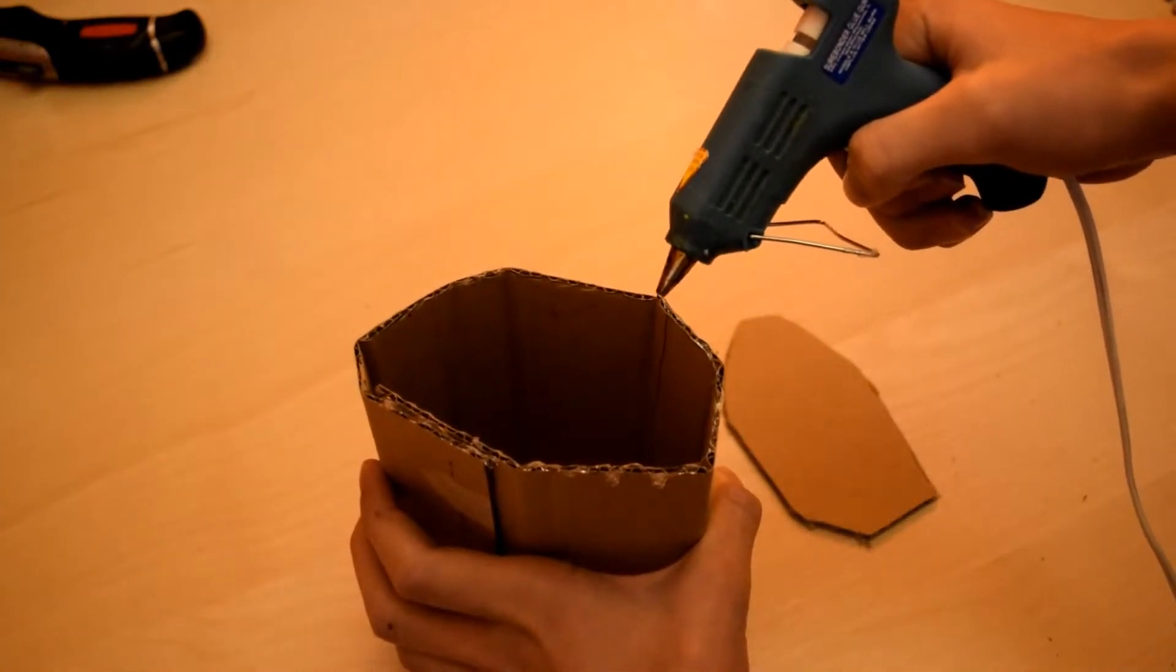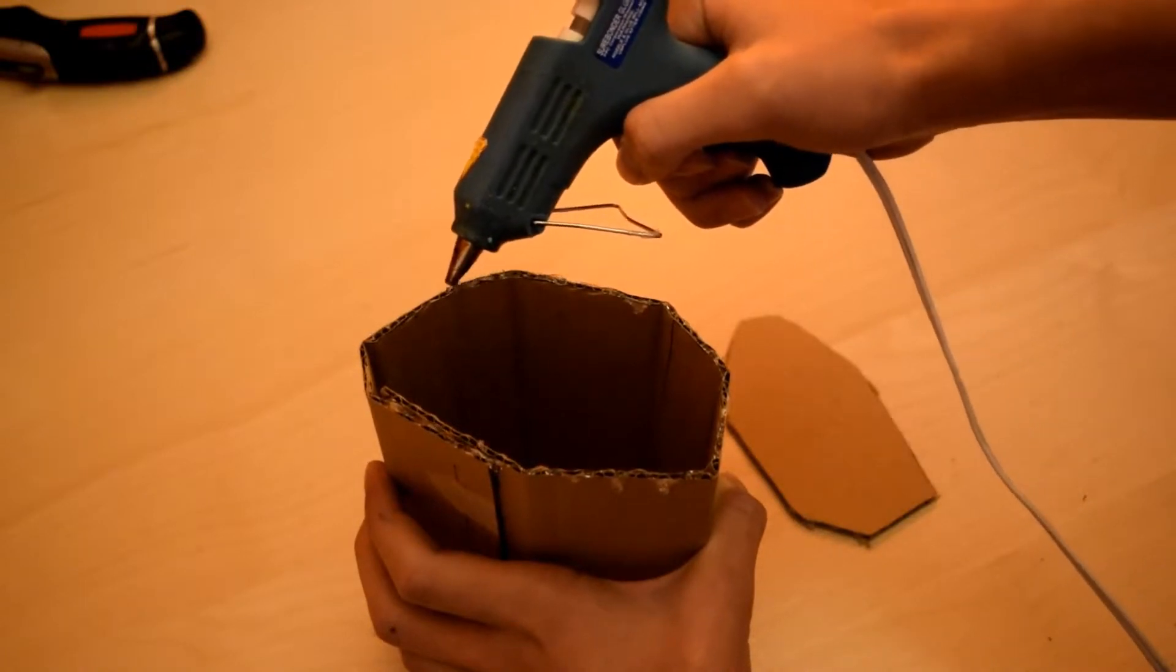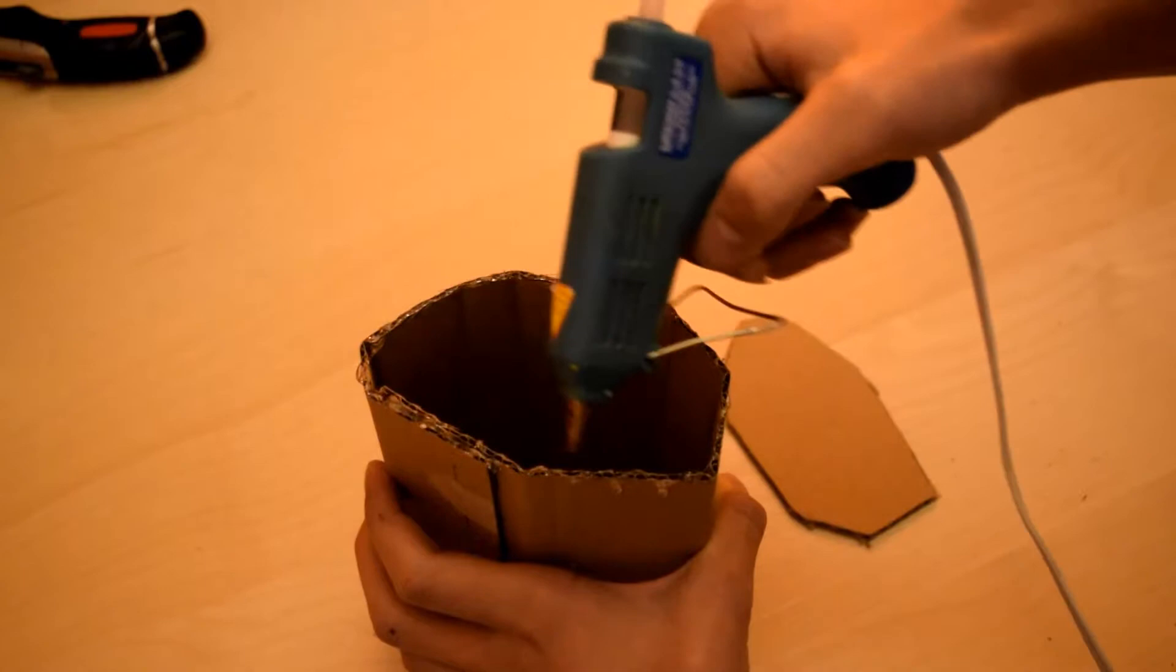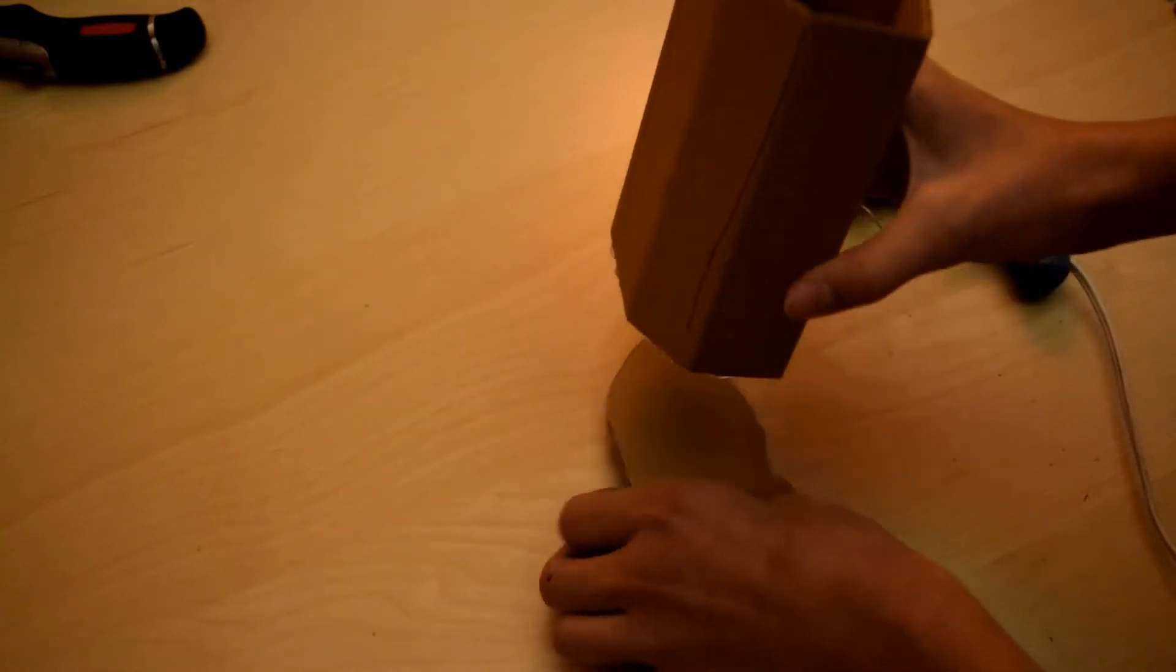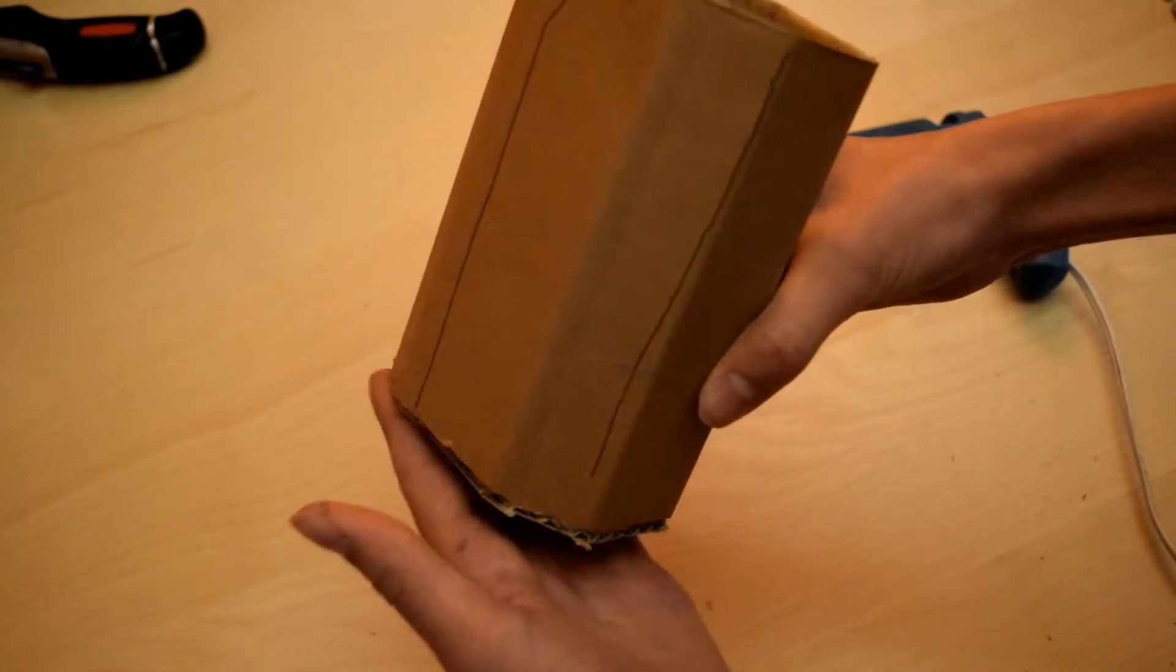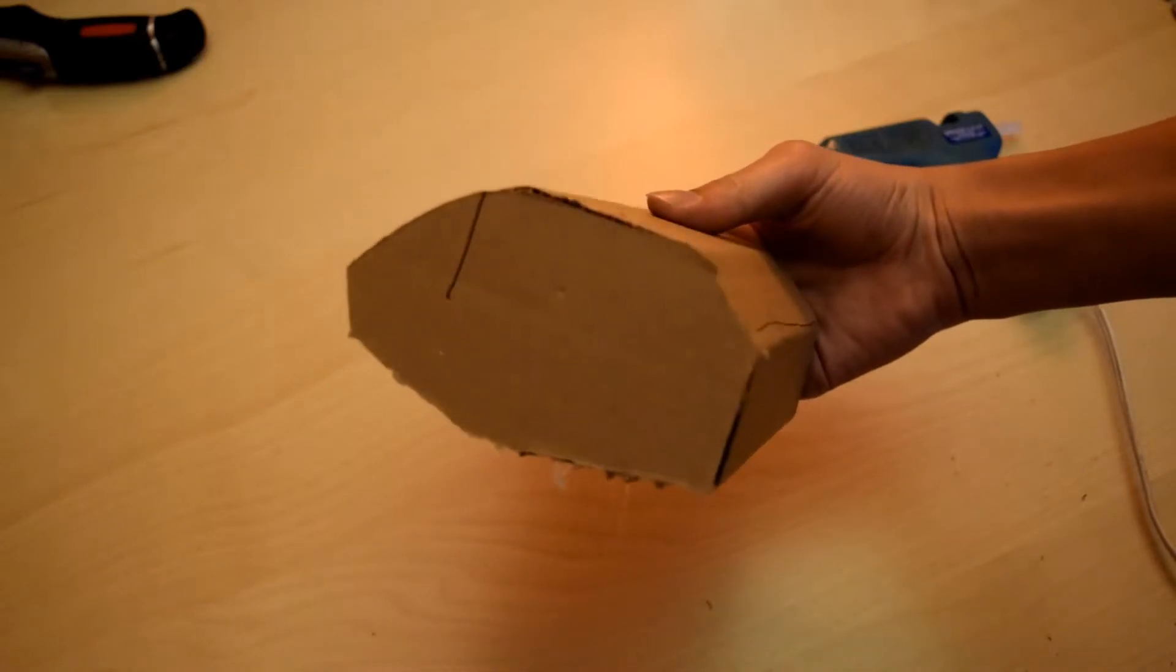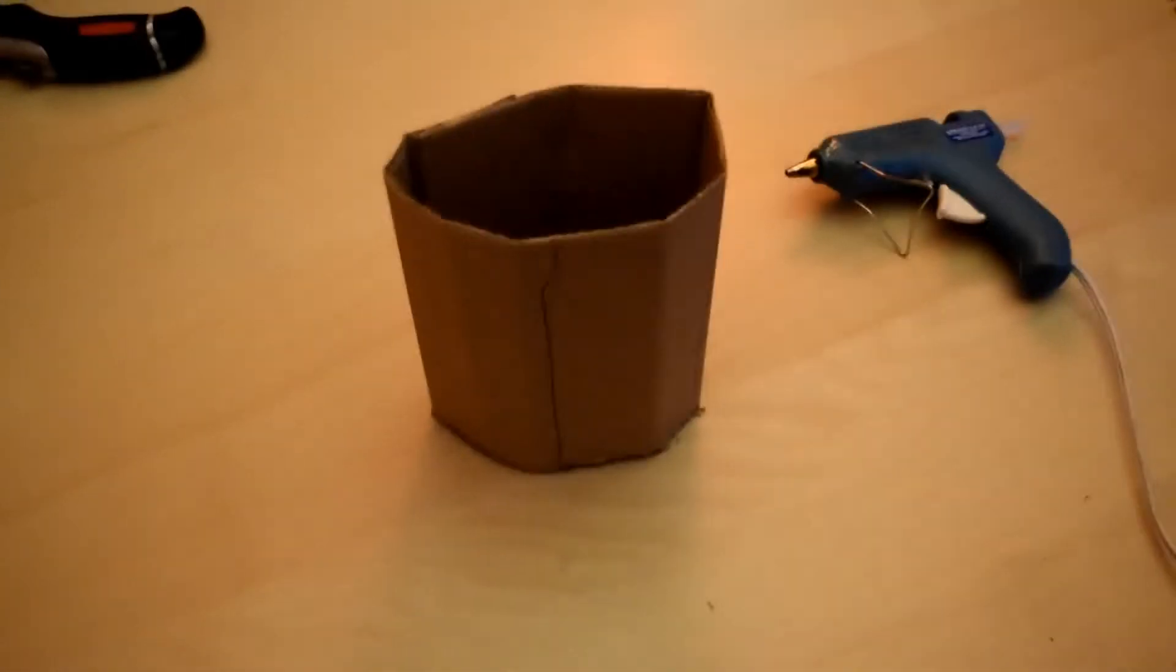You're going to take your hot glue and go all the way around the edges. And again, don't worry if it's messy, we'll clean it up later. Then quickly so that the glue doesn't dry, line it up with the bottom of your holster. And as you can see, it fits perfectly so that your holster won't be bulky. Now you just wait for it to dry.